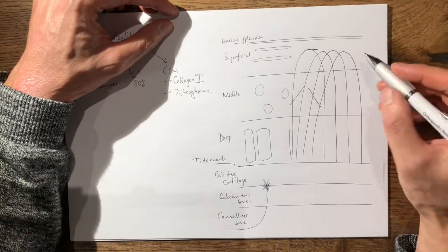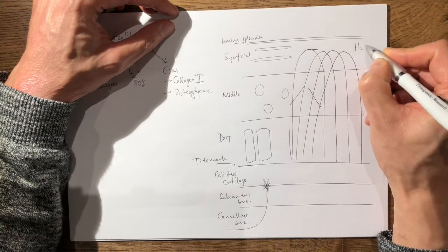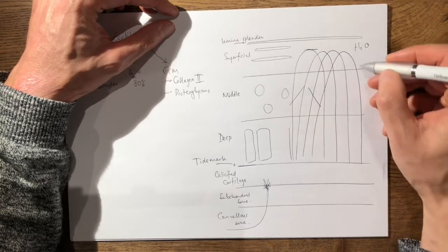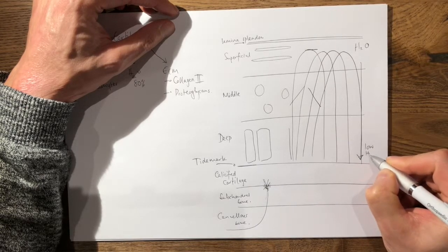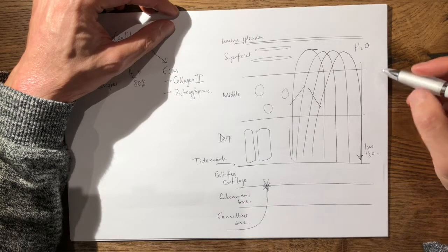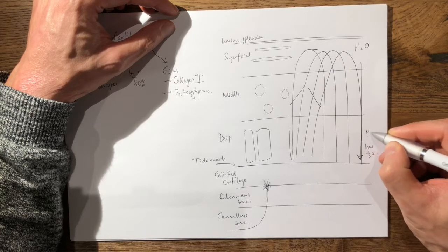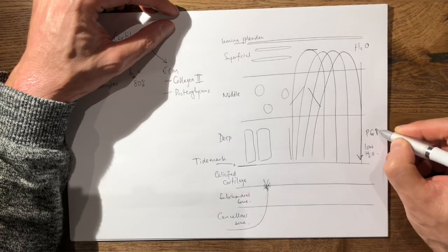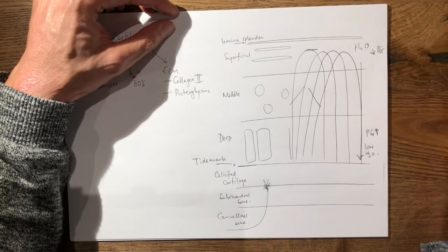The other thing of note is that the more superficial layer has a higher concentration of water. And as you get deeper, the concentration of water becomes lower. But conversely, at the bottom, you have a higher concentration of proteoglycans, whereas at the surface, you have a relatively lower concentration of proteoglycans.